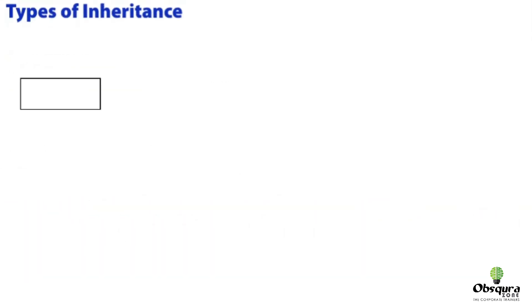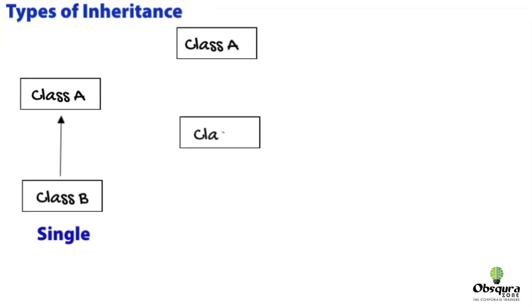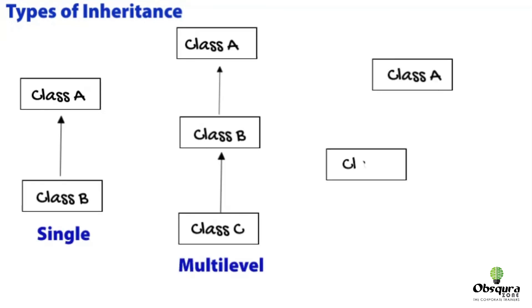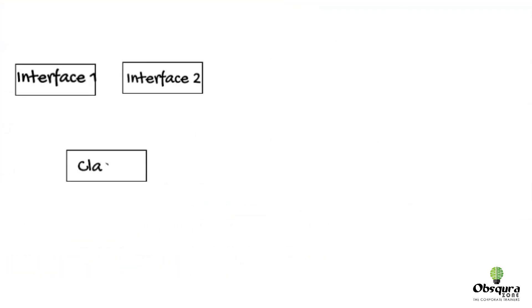So now let's see the different types of inheritance we have in Java. We have single, multi-level, hierarchical, multiple, and hybrid inheritance.